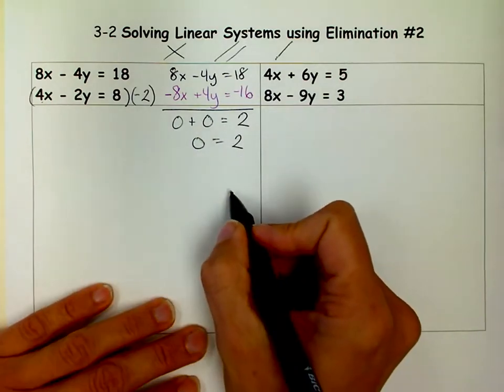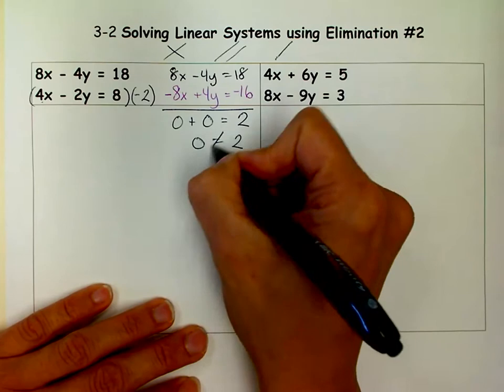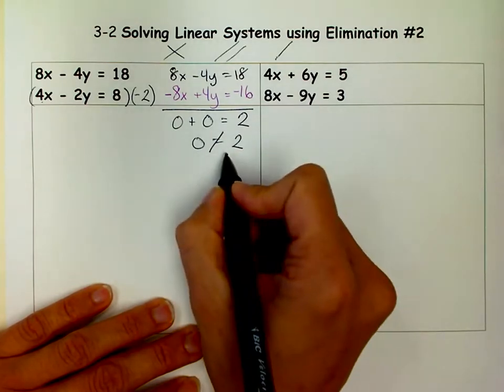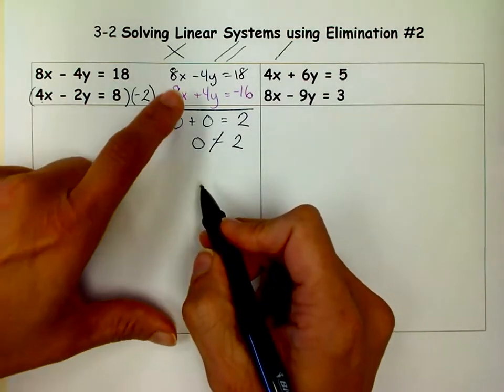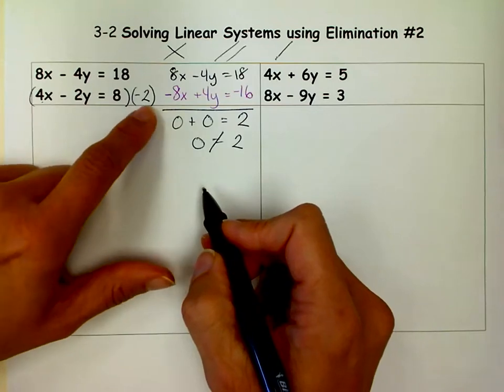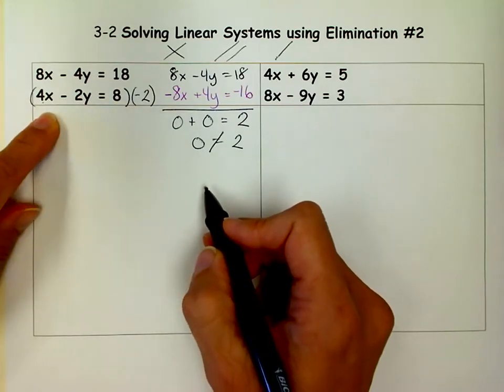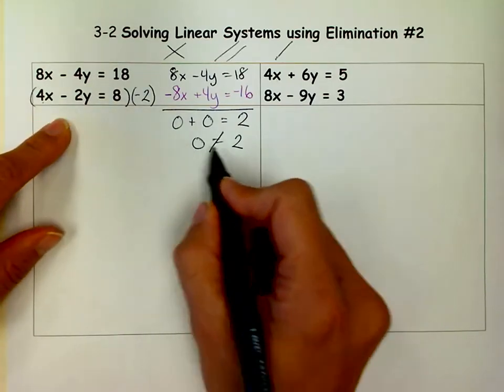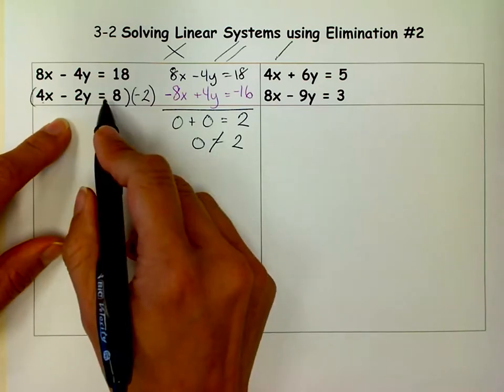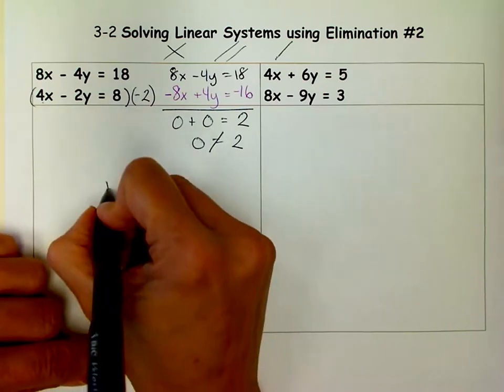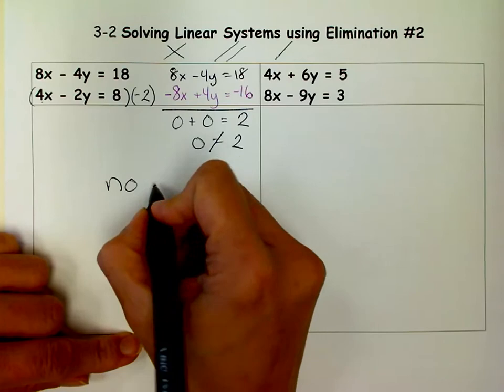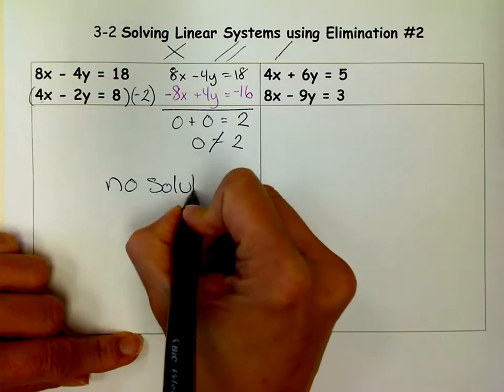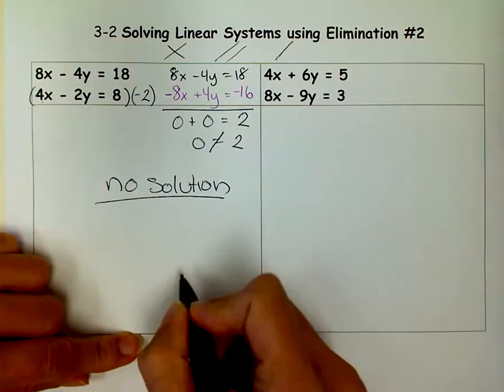Now, does 0 equal 2? It does not. This is not a true statement. So sometimes when I get things to cancel out completely, I just double check to make sure I did it correct. And I know I did. And what that means is that these two lines are parallel. They have the same slope, which means they do not intersect. So I have no solution. So the answer to this one is no solution.